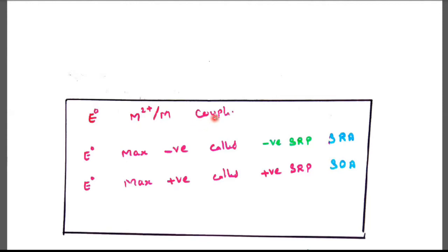That electrode potential value E⁰ value, M²⁺ and M couple, maximum negative value are called negative reduction potential. They are called strong reducing agents. And E⁰ value maximum positive value are called positive reduction potential. They are called strong oxidizing agents.